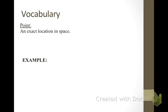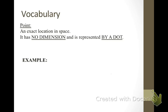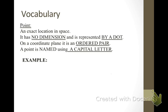The very first thing that we're going to talk about is a point, and a point is kind of a nebulous concept. It's just an exact location in space. It has no dimension, and it is represented by a dot. On a coordinate plane, we represent a point with an ordered pair. A point is named using a capital letter, and that's a lot of what we're going to be talking about is how we name things in geometry.